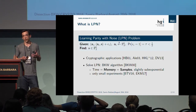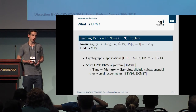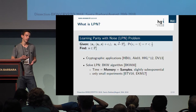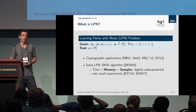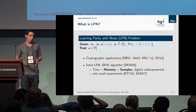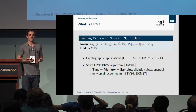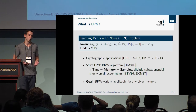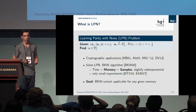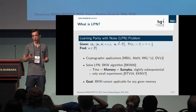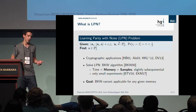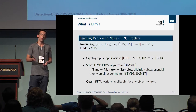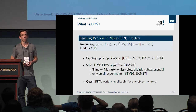If we want to estimate the concrete hardness of suggested parameters for this problem, we need to rely on experimental data. As long as these experiments are restricted to such a small dimension, we get estimates that are quite inaccurate. So we want to present a BKW variant that is applicable for any given amount of memory. We will achieve this by giving the first time-memory trade-off for the BKW algorithm, which will reduce the memory complexity while incurring a slight increase in time complexity.